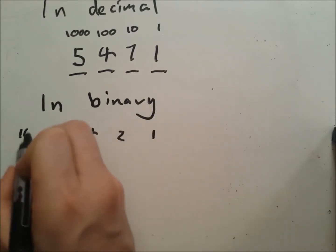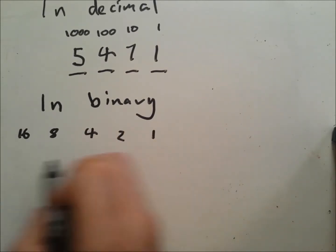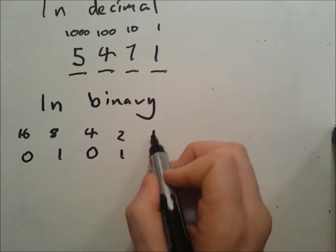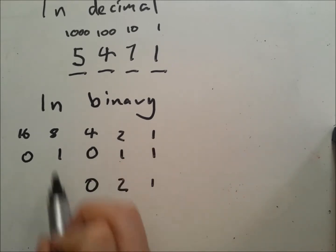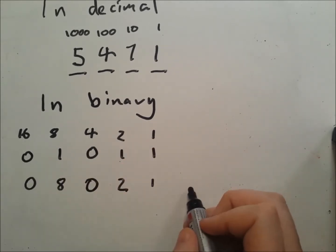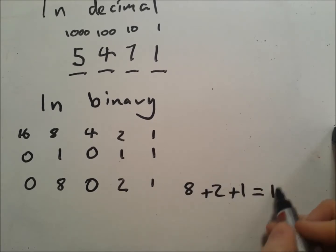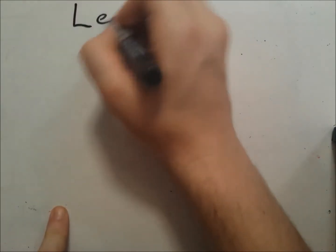In binary we have the same idea, but each column is 2 times as large as the last. So we've got 1, 0, 1, 1 here. This is a quick calculation to show you how binary makes a number. We're going to do some more of these in a moment.